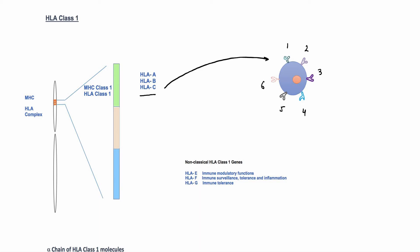There are also three non-classical genes in this region. These are much less polymorphic as compared to classical genes. These genes form proteins that have role in immune tolerance and immune modulation. HLA is also a cell surface receptor for natural killer cells.